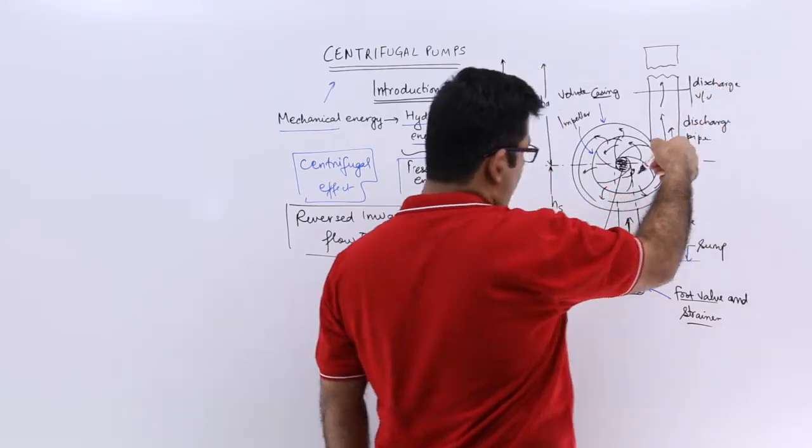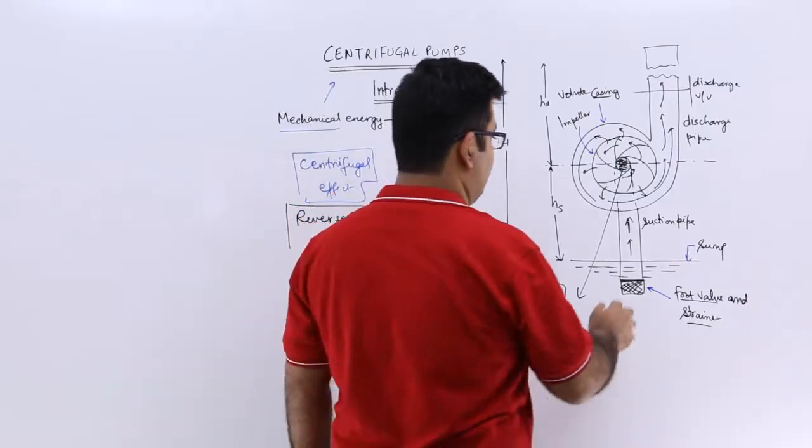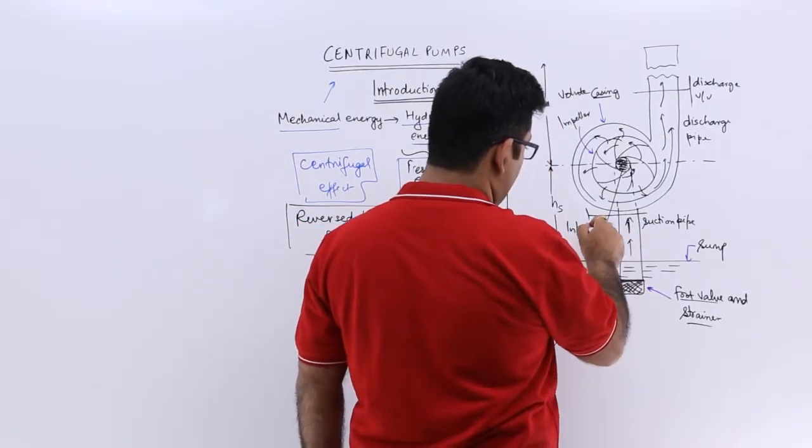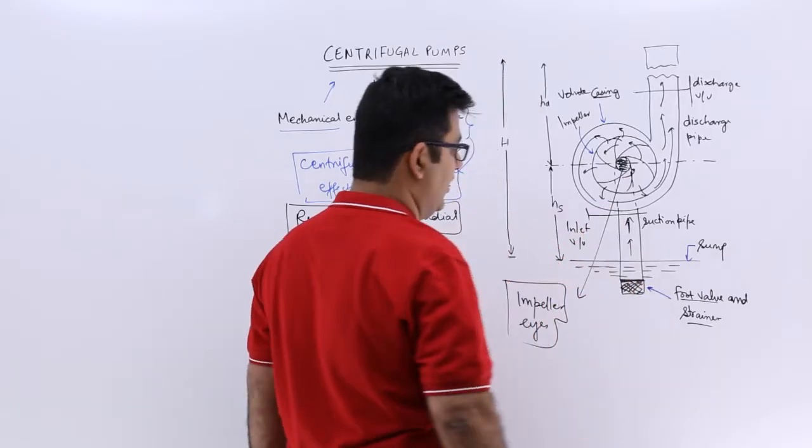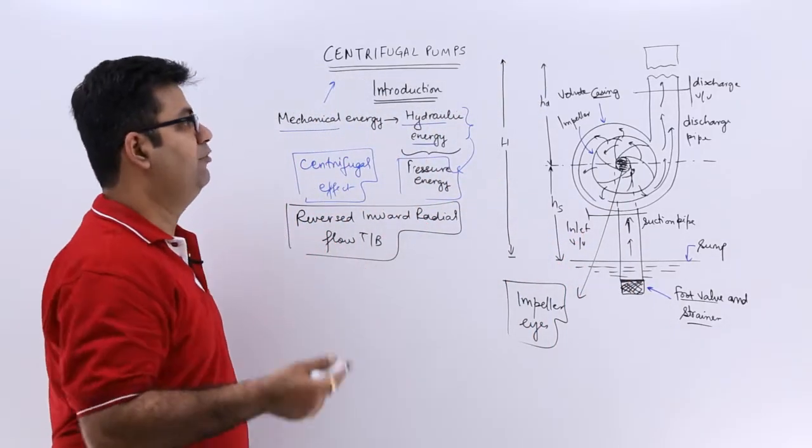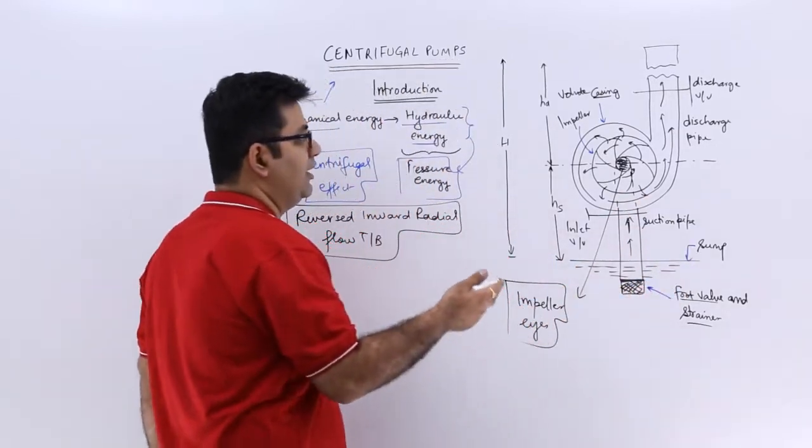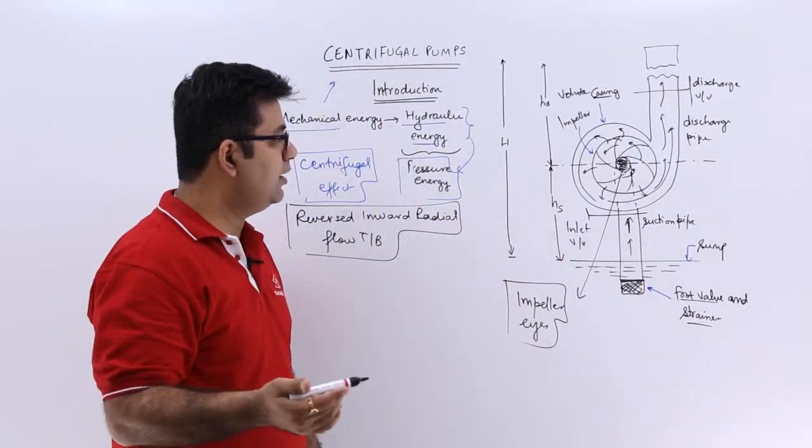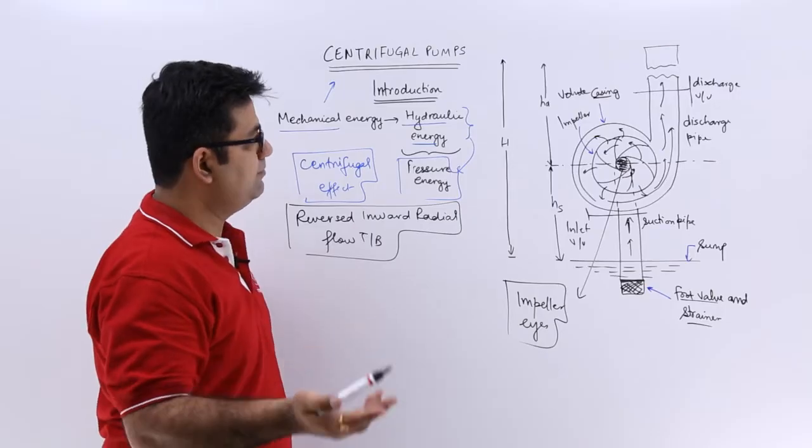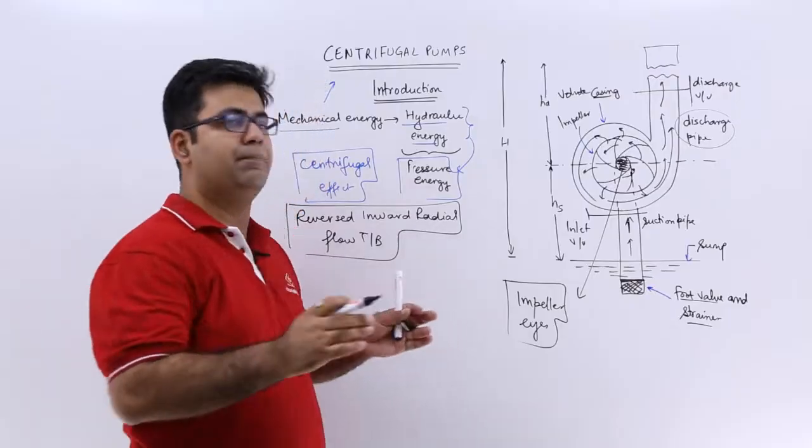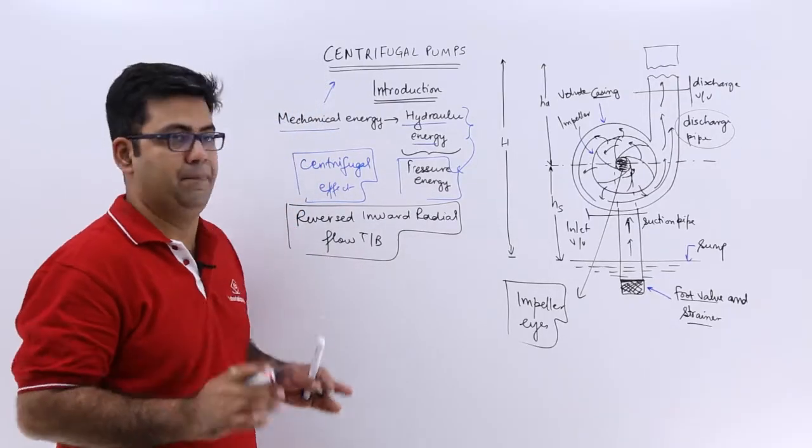Now we have not shown an inlet valve, so you need to show some inlet valve as well. So let us say this is the inlet valve. It controls the inward flow of the liquid into the impeller eye. So in a very simplistic manner, you have suction pipe, impeller, volute casing and a discharge pipe as the main parts of a centrifugal pump.